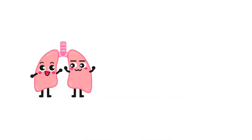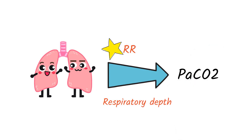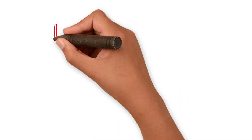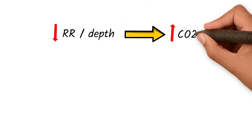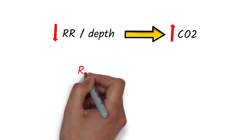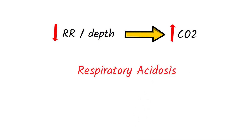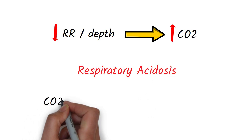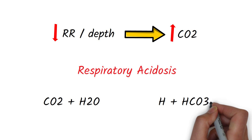The lungs regulate PaCO2 by changes in the rate or depth of respirations. A decrease in the respiratory rate or depth can lead to carbon dioxide retention, as you breathe out less carbon dioxide. The retention of carbon dioxide is called respiratory acidosis, because carbon dioxide reacts with water to produce hydrogen ions, which reduces the pH.